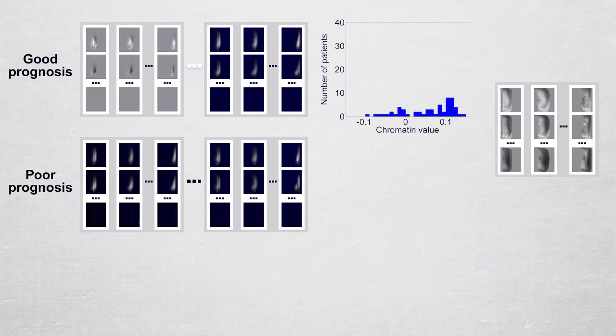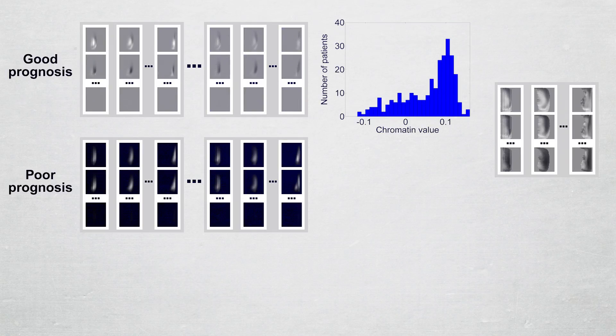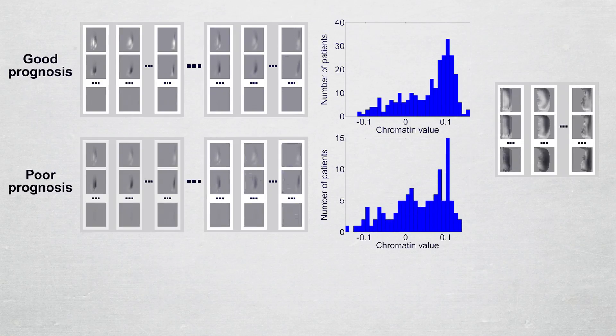The process is repeated for each patient with good prognosis, which yields a distribution of chromatin values for good prognosis patients. The same operation is performed for patients with poor prognosis.